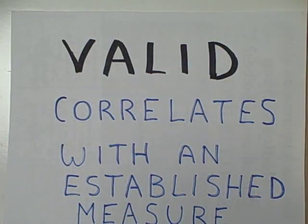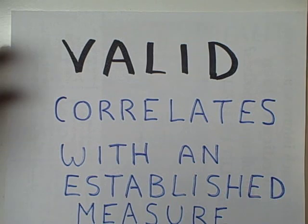The way that we establish the validity of a given measure is we show that it correlates with some kind of established or accepted measure of that particular variable.